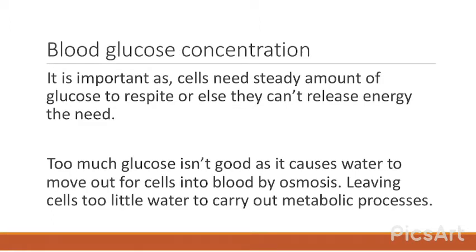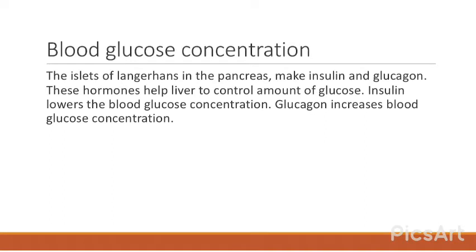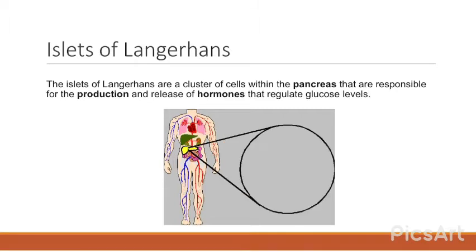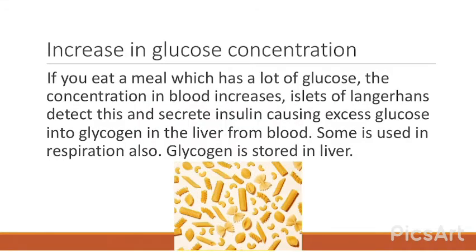Blood glucose concentration must be kept steady because cells need a constant supply of glucose to respire and release energy. Too much glucose causes water to move out of cells into the blood by osmosis, leaving cells with too little water for metabolic processes. The islets of Langerhans in the pancreas produce insulin and glucagon. These hormones help the liver control glucose levels: insulin lowers blood glucose concentration and glucagon increases it.